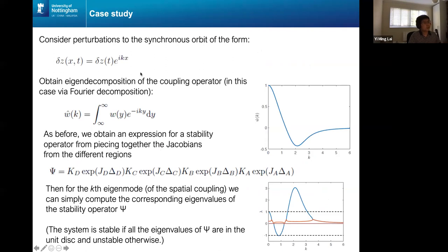And then now we're going to consider the effect of the spatial coupling as perturbations to the synchronous orbit of this form, which is very common in wave analysis. And then the spectral decomposition of the coupling is obtained via Fourier decomposition. And then we just get this stability operator phi by piecing together the Jacobians in the four different regions that we're talking about. Because there's sort of discontinuities, we have some extra matrices K that you have to calculate. And I won't really go into that today because for time reasons, but once you've got those, then it's just multiplying a bunch of matrices together, which is fairly simple. And then for the K-th eigenmode of the spatial coupling, you can compute the stability operator and its corresponding eigenvalues. And so the system's stable if they're all inside the unit disc and unstable otherwise.